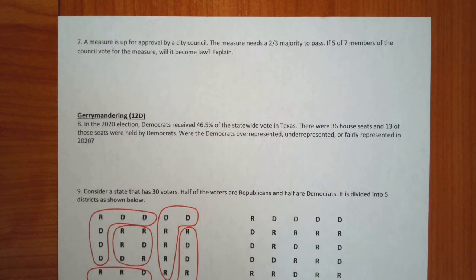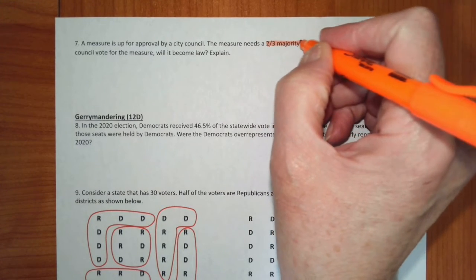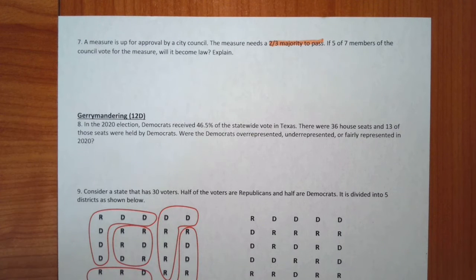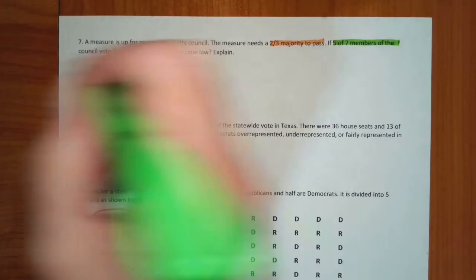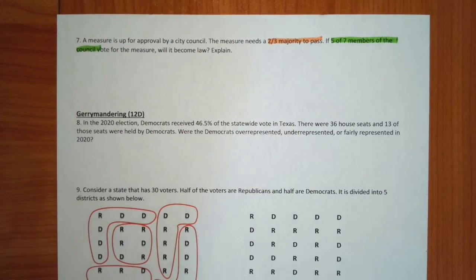A measure is up for approval by a city council. The measure needs a two-thirds majority to pass. So we need two-thirds majority to pass. If five of seven council members voted for it, did it pass? Okay, let's see what we've got to look at. We have to compare the five of seven members of the council to two-thirds. And there are a couple of ways that we can do this.